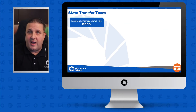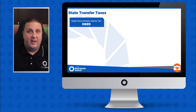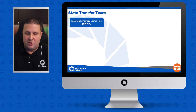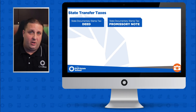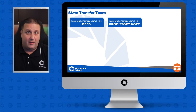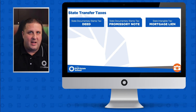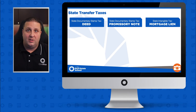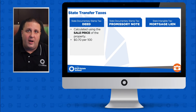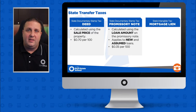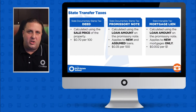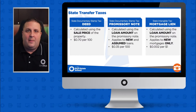Now let's talk about the three state transfer taxes. The first is the documentary stamp tax on the deed, which transfers property from the grantor to the grantee — calculated based on the sale price at 70 cents per $100. The second is the documentary stamp tax on promissory notes — when you borrow money from the bank and sign a note to pay it back, calculated on the loan amount for both new and assumed notes. The third is the intangible tax on the mortgage lien — only on new liens — at $0.002 per dollar, or simply multiply the new mortgage amount by 0.002.